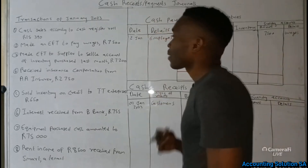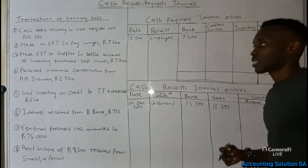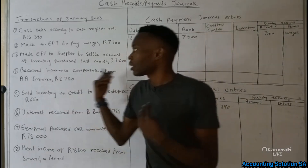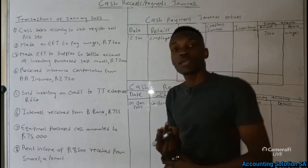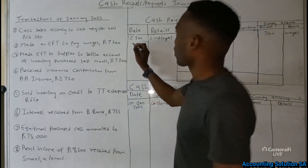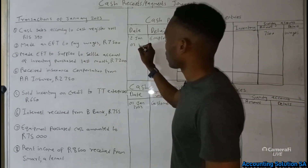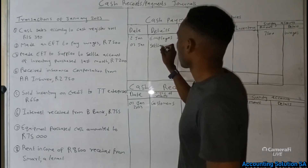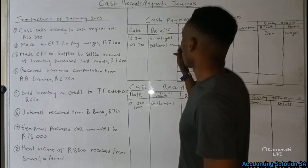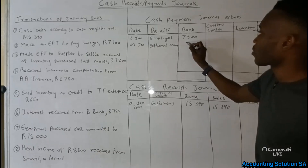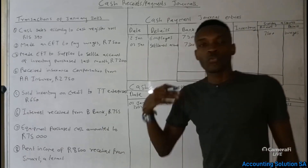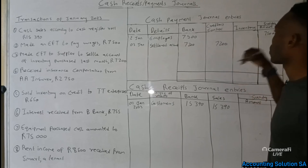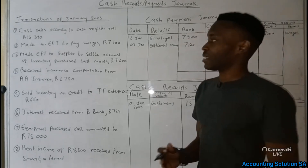Transaction number three: an EFT to a supplier to settle the account for inventory purchased last month, amounting to 7,200. Last month we purchased inventory on credit and now we are paying to settle that debt, which means we make a payment and record it under cash payment general. Date is 3 January, details say 'settlement.' The amount falls under creditors control, so we do not go to the sundry account.